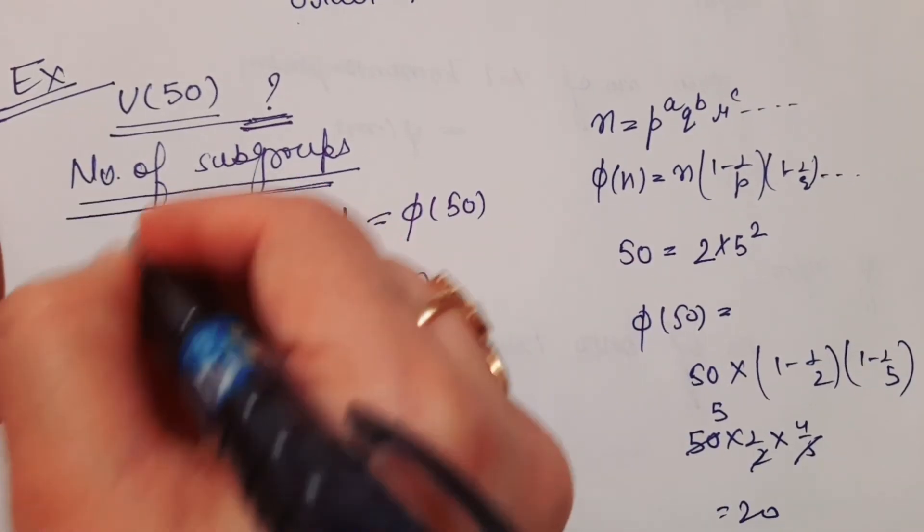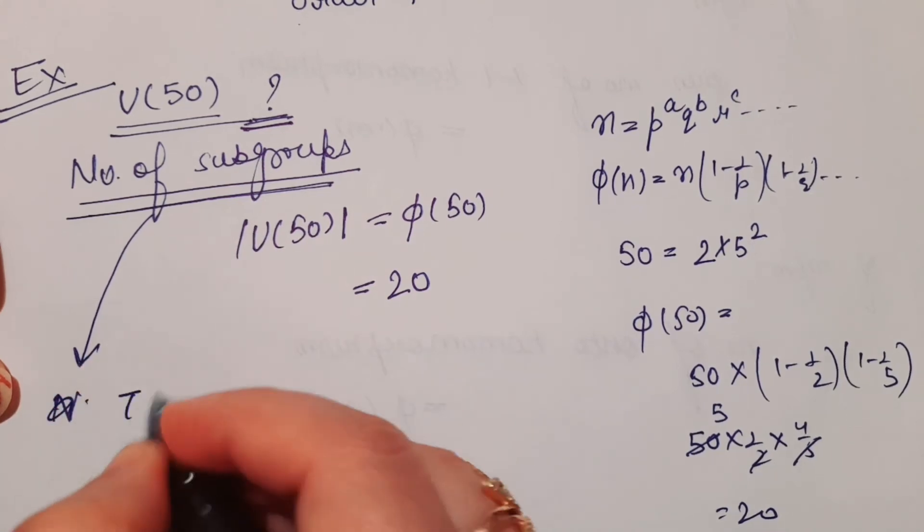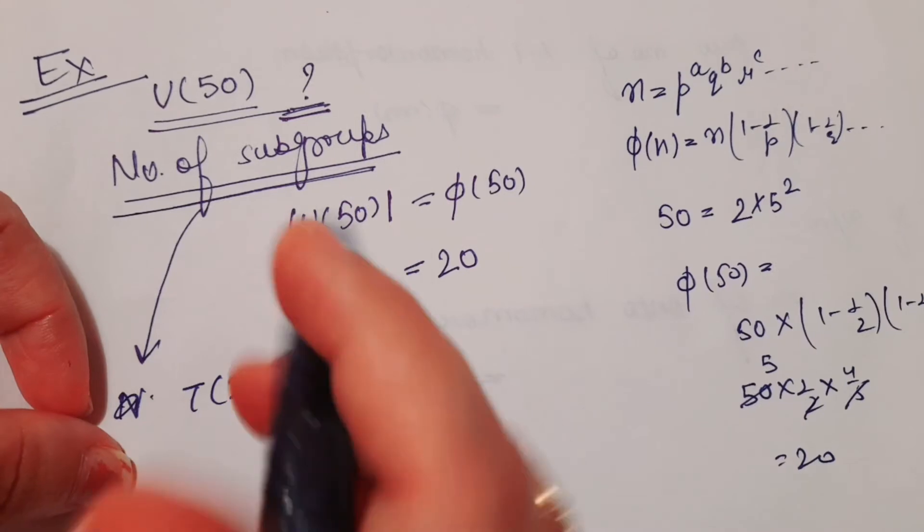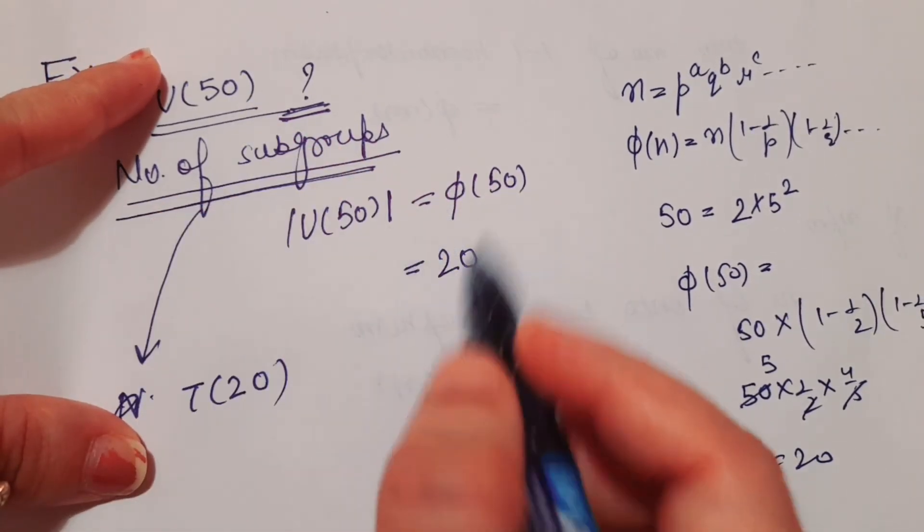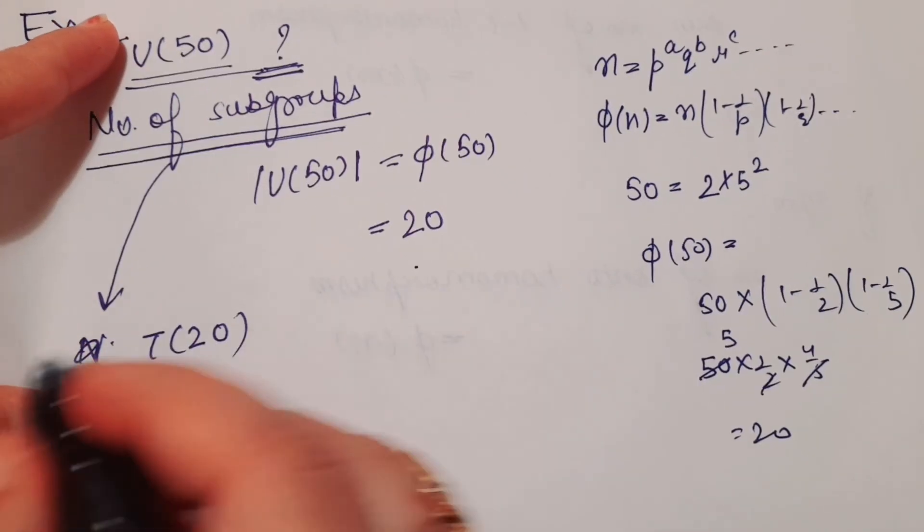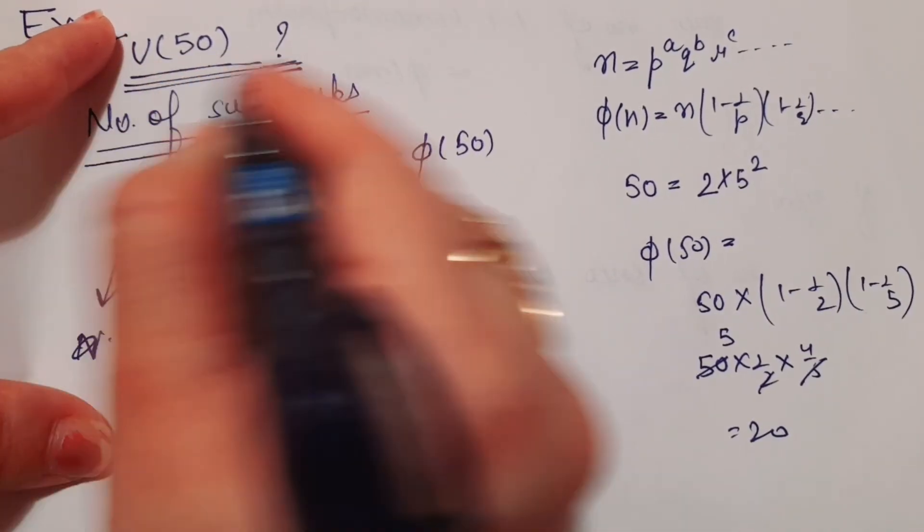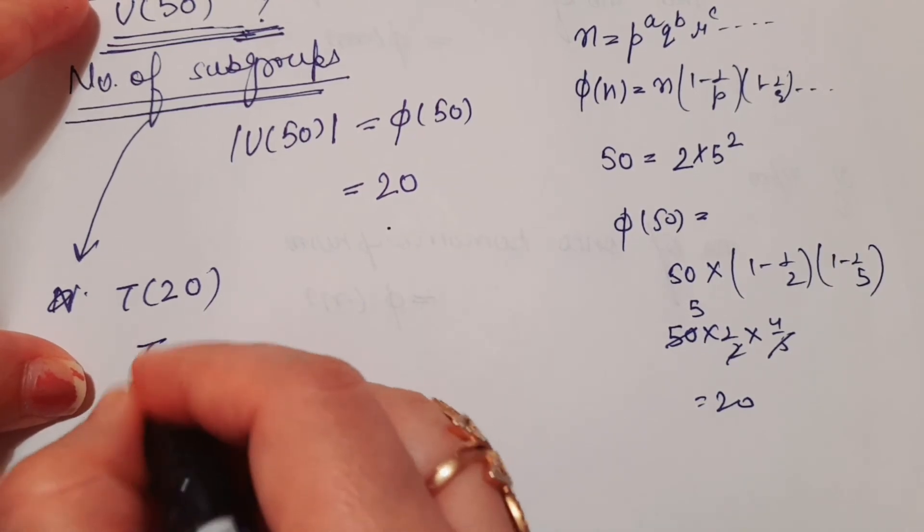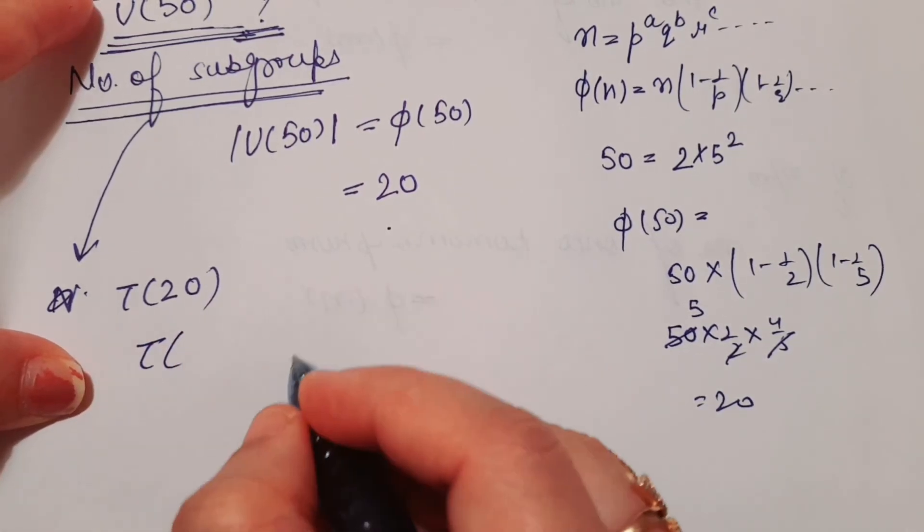This was not tough if you know how to calculate φ(50) and τ(20). It is very easy to calculate the number of subgroups of U(50)—it's τ(20). To find τ(20), you can prime factorize 20.